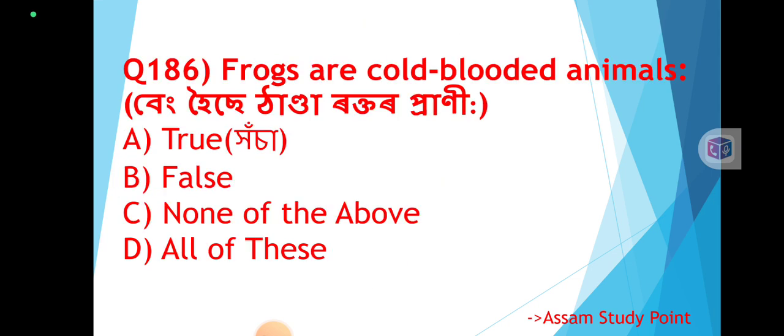Question 186: Frogs are cold-blooded animals. Bang hoyse ayathanda roktor vraani — frogs are cold-blooded creatures. The reason is that they are ectothermic (ayathaan). The correct answer is Option A (Ayathaan).